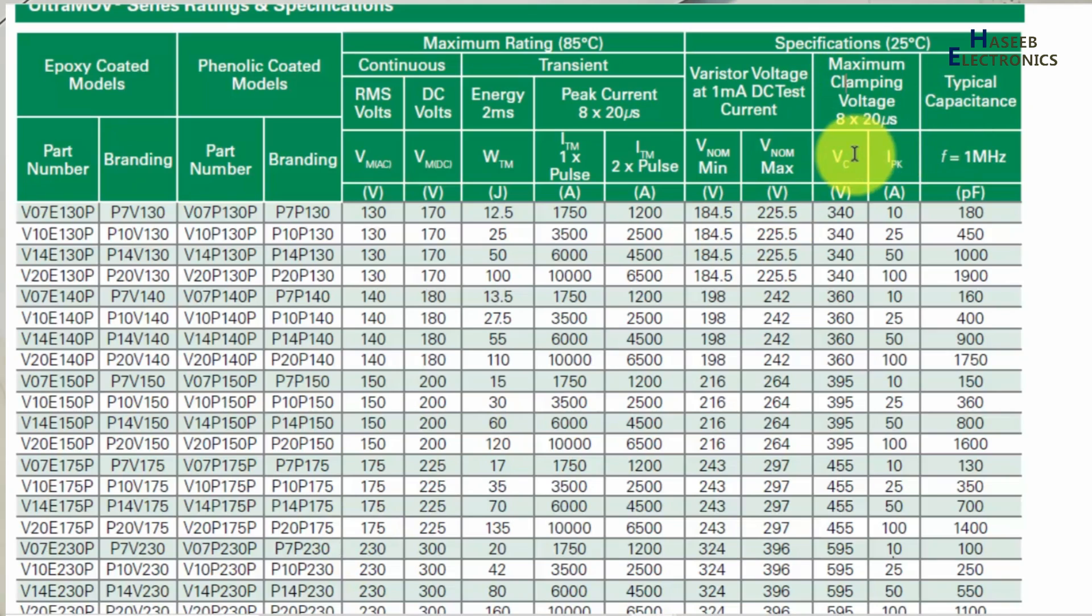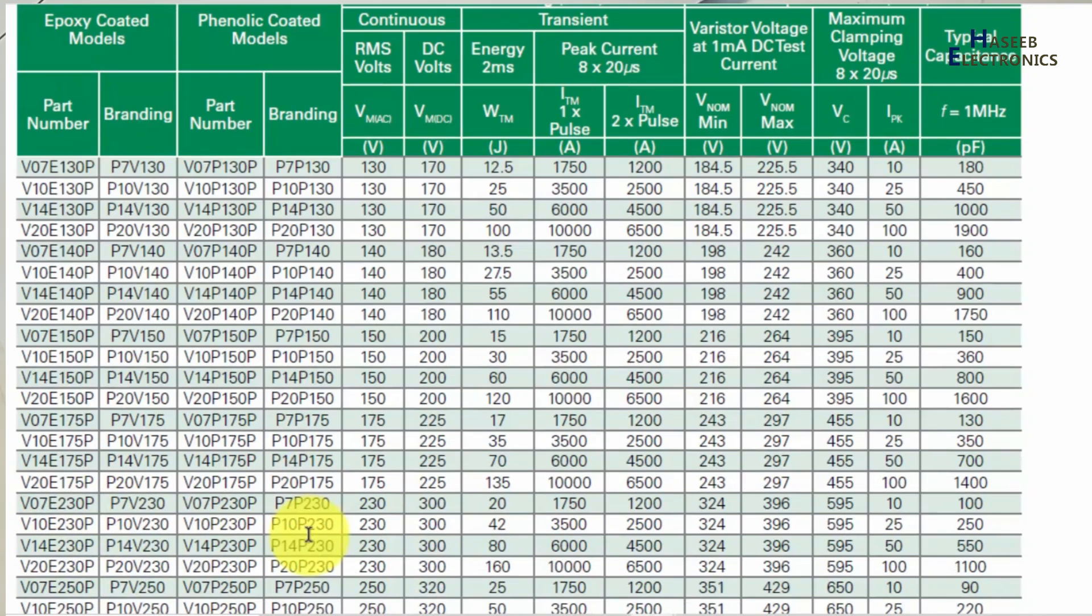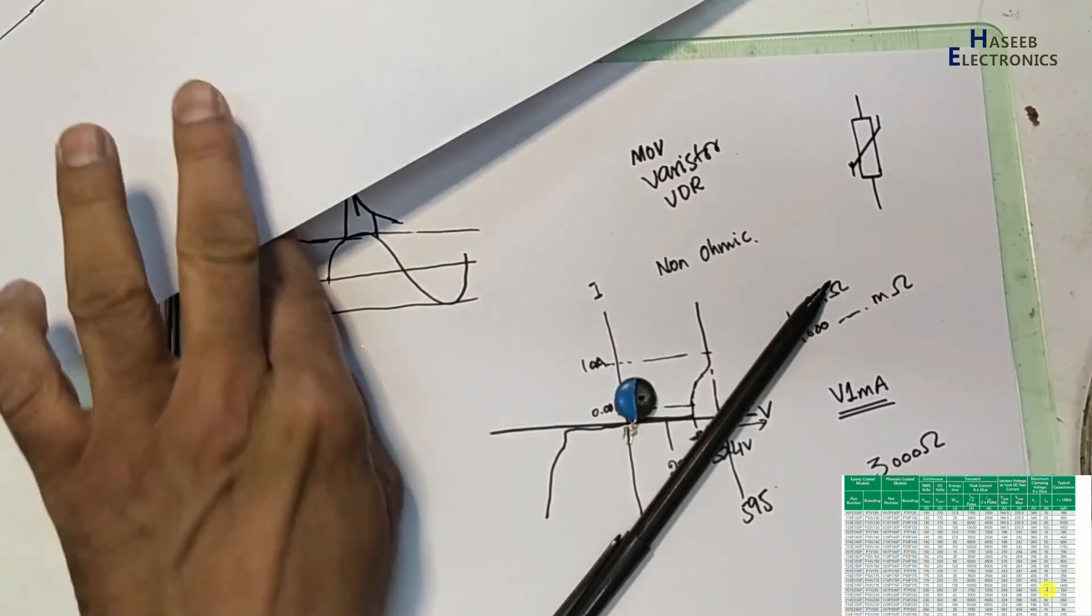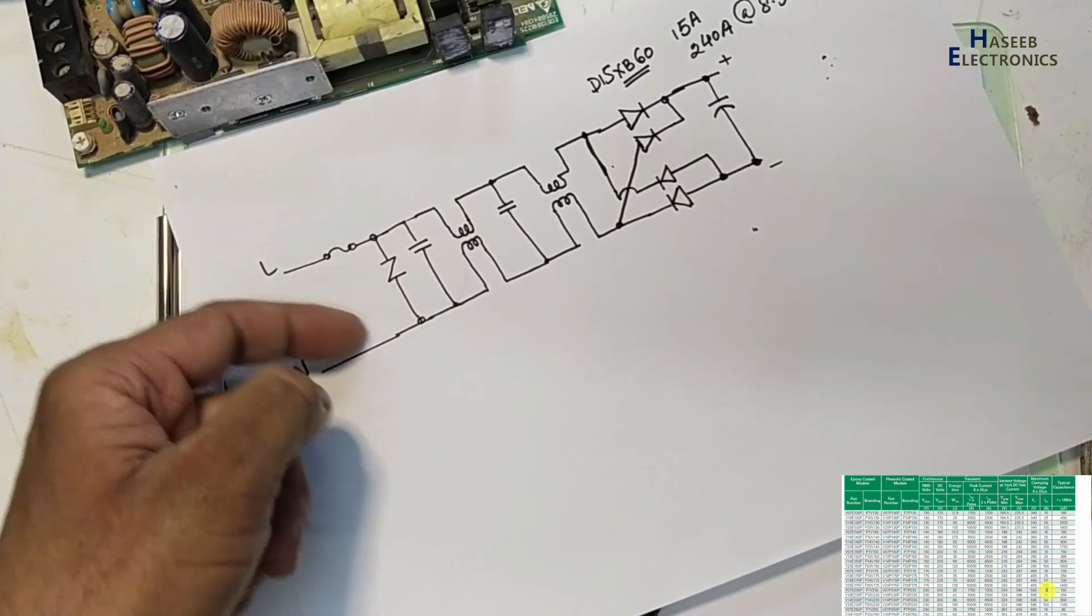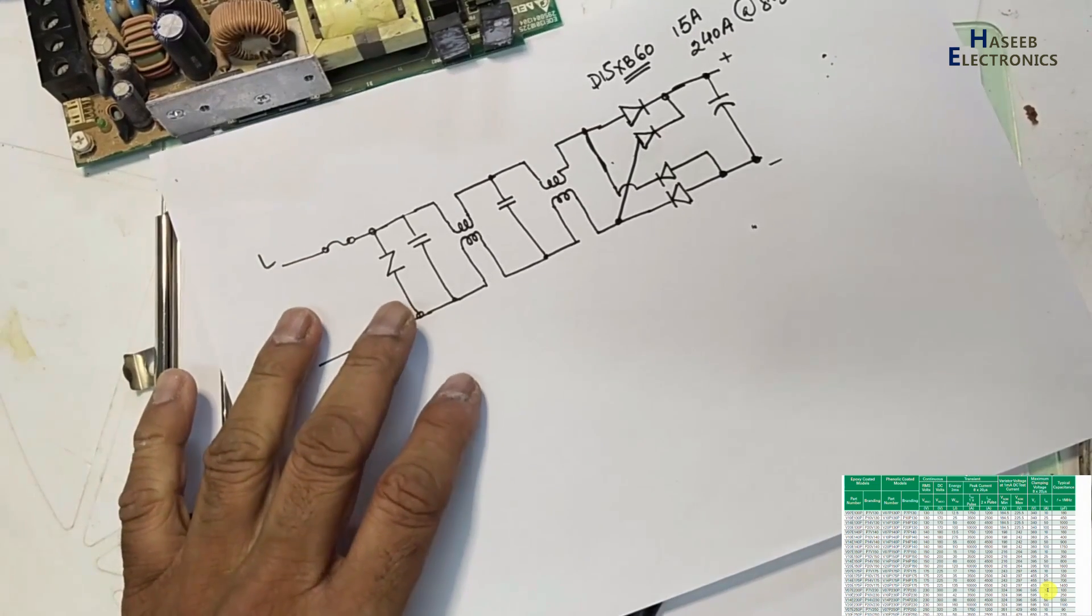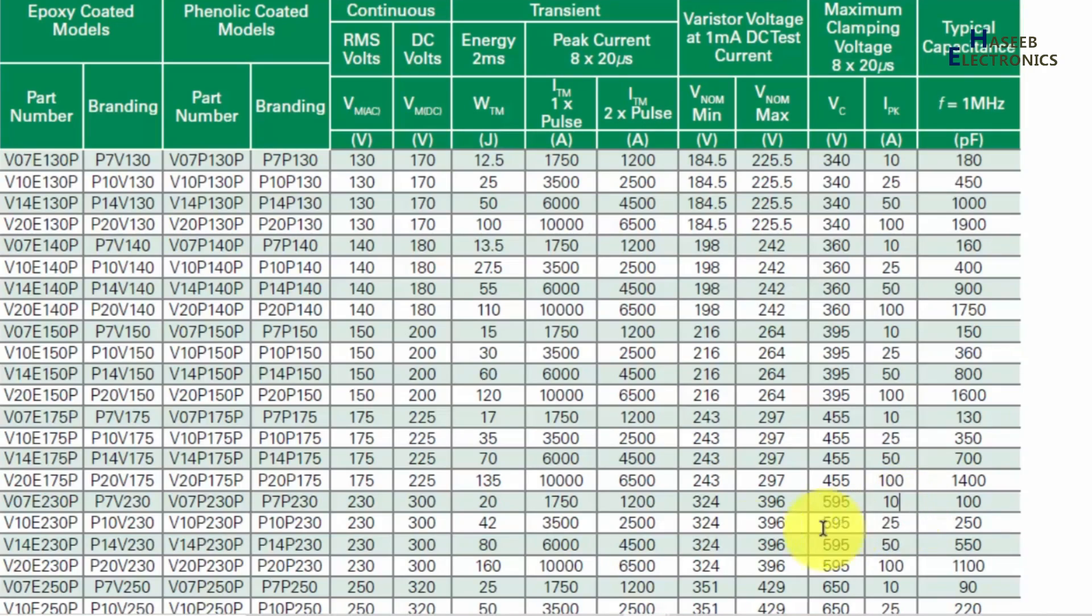Then maximum clamping voltage - that is also 8 by 20 microsecond pulses. When the voltage increases, if we see this disk size, that is 7 - V07E230P - it will clamp voltage at 595 with 10 ampere current in this path.